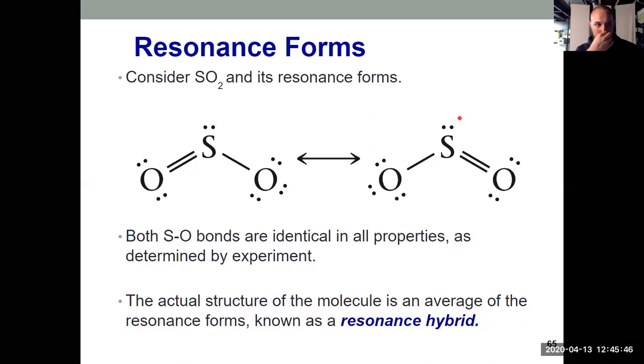So we don't alternate between having a double bond and a single bond. It's actually kind of like a bond and a half. A bond of 1.5 that exists simultaneously in both areas.